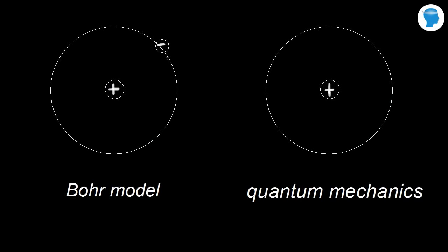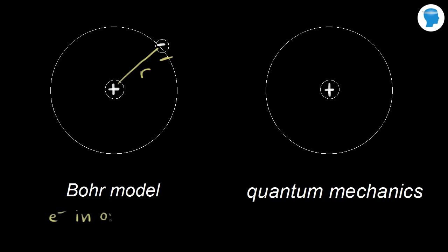In the Bohr model of the hydrogen atom, the one electron of hydrogen is in orbit around the nucleus at a certain distance r. In the quantum mechanics version of the hydrogen atom, we don't know exactly where the electron is, but we can say with high probability that the electron is in an orbital. An orbital is the region of space where the electron is most likely to be found.